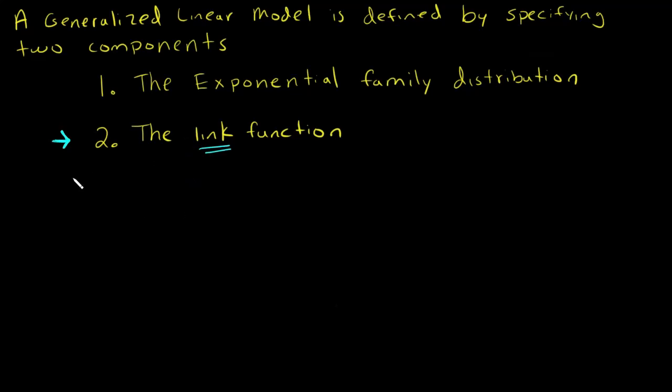We are linking a random component. We have the random component which is our outcome variables Y, or response variables Y, and they're following that exponential family distribution. So that could be the normal distribution, Poisson, binomial, etc.